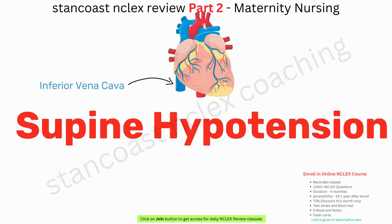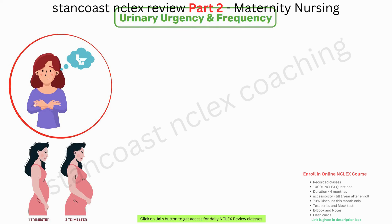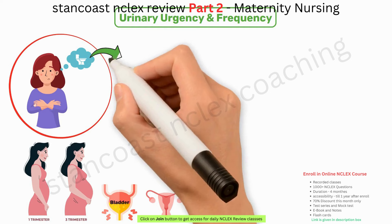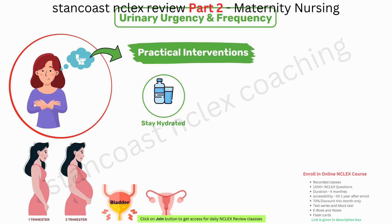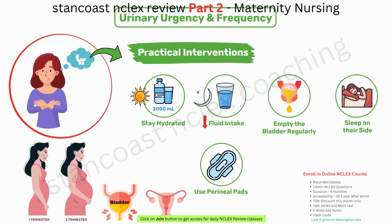Urinary urgency and frequency are common discomforts, typically experienced in the first and third trimesters due to the pressure exerted on the bladder by the growing uterus. Expectant mothers are advised to stay hydrated by drinking at least 2,000 milliliters of fluids during the day, reduce fluid intake in the evening, empty the bladder regularly, sleep on their side at night, use perineal pads as needed, and perform Kegel exercises to strengthen pelvic floor muscles.